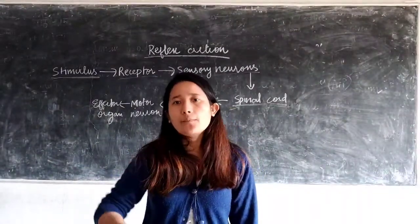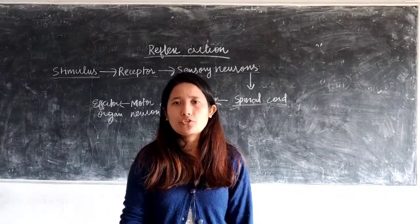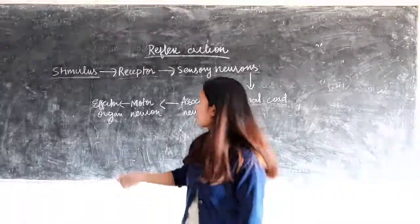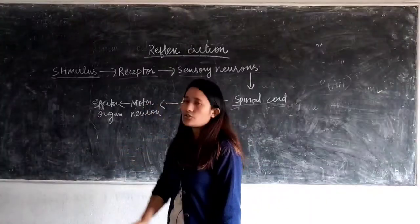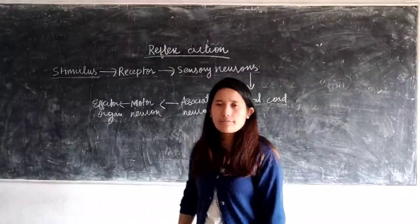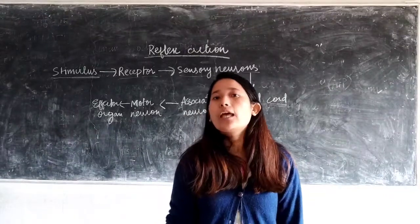Because it would immediately remove itself from that particular region where it finds a threat. So the affected organs - the motor neuron takes the message to the affected organs. So this whole pathway which your nerve impulse travels is referred to as reflex arc.